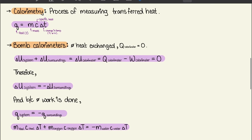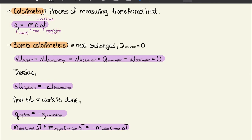Calorimetry is the process of measuring transferred heat. The equation is q = mcΔT — a helpful mnemonic is 'MCAT is cute with a Q.' Here, q is heat in joules, m is mass, c is the specific heat constant, and ΔT is the change in temperature, which can be in either Kelvin or degrees Celsius.